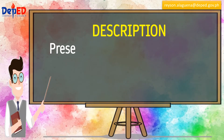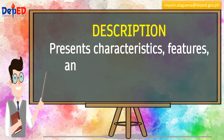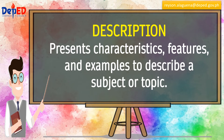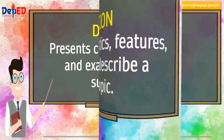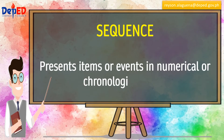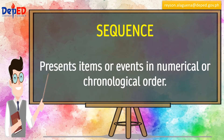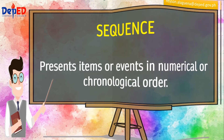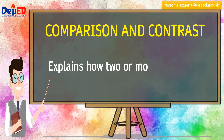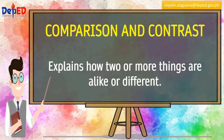Description presents characteristics, features, and examples to describe a subject or topic. Sequence presents items or events in numerical or chronological order. Comparison and contrast explains how two or more things are alike or different.